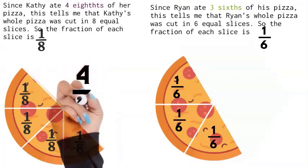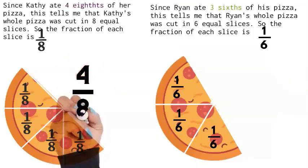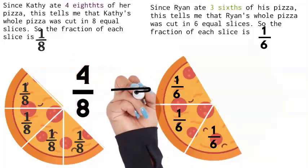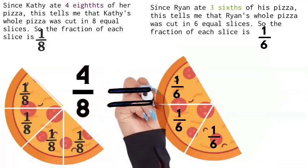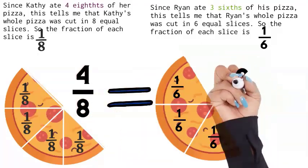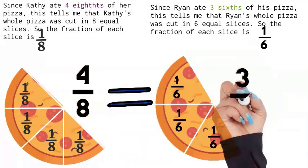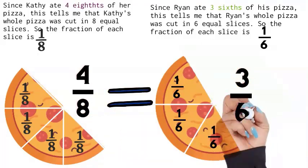So it's like they each ate one half. What does that tell me? Well, four eighths is equal to three sixths.